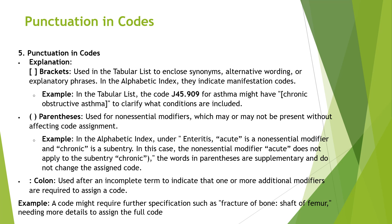Next, coming to punctuations. In the ICD book or software you will see brackets, parentheses, and colons. Brackets in the tabular list provide alternative wording for the same condition — for example, hypertension may also be called primary hypertension or essential hypertension, but the code is the same. In the alphabetic index, brackets indicate manifestation codes.